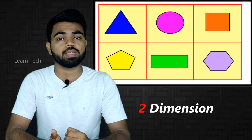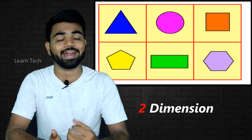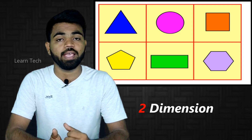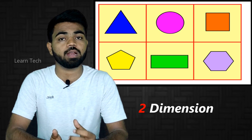We will see the 2D example. In 2D we have shapes like a circle, square, and rectangle. Then we will look at the 3D example.